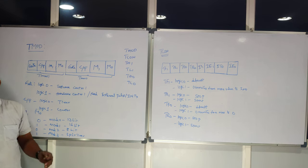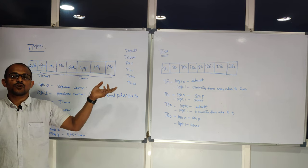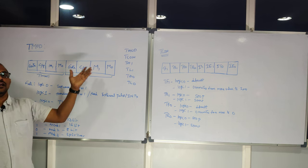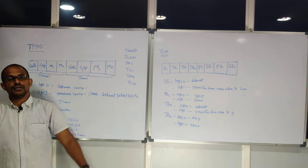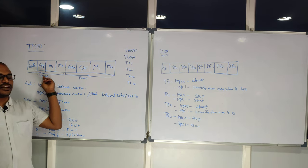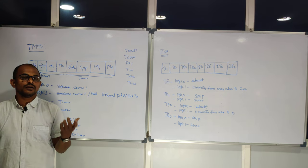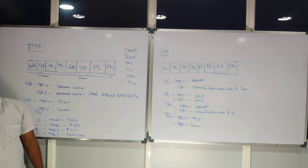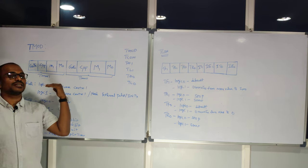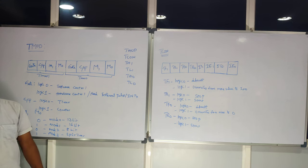From 8051 SFR registers, some are not bit-addressable and some are bit-addressable. Bit-addressable means you can access individual bits in programming. If the register is not bit-addressable, you need to assign the entire value of the register in your program — you cannot access a single bit independently.